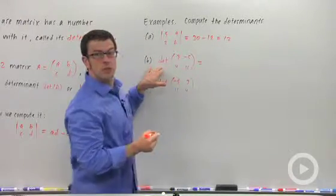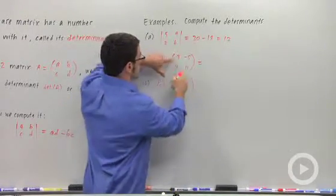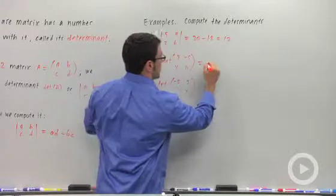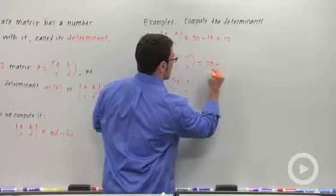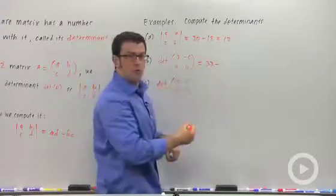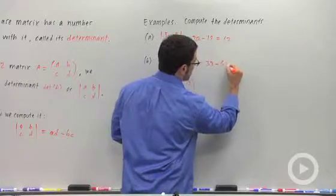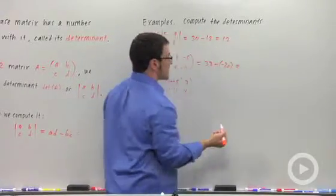Now this is also a determinant. We calculate it exactly the same way. 3 times 11, 33, minus negative 5 times 4, negative 20. So that's 33 plus 20, 53.